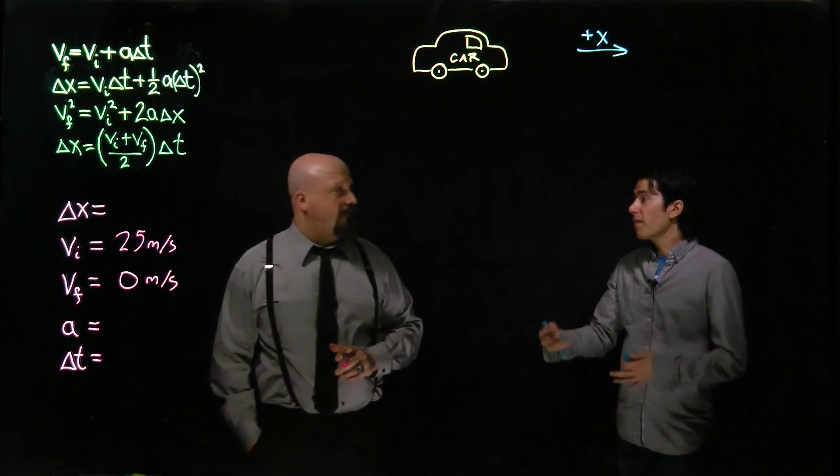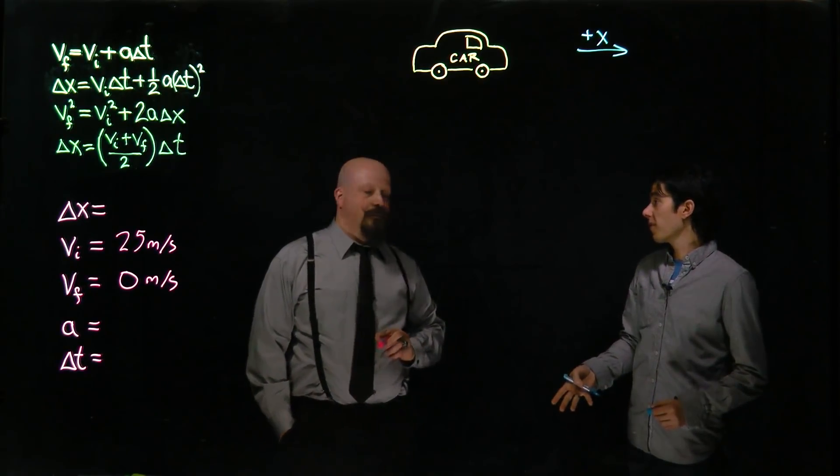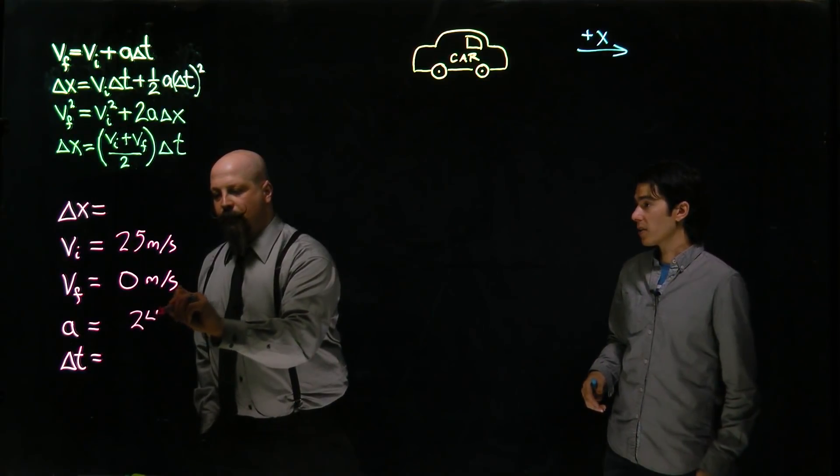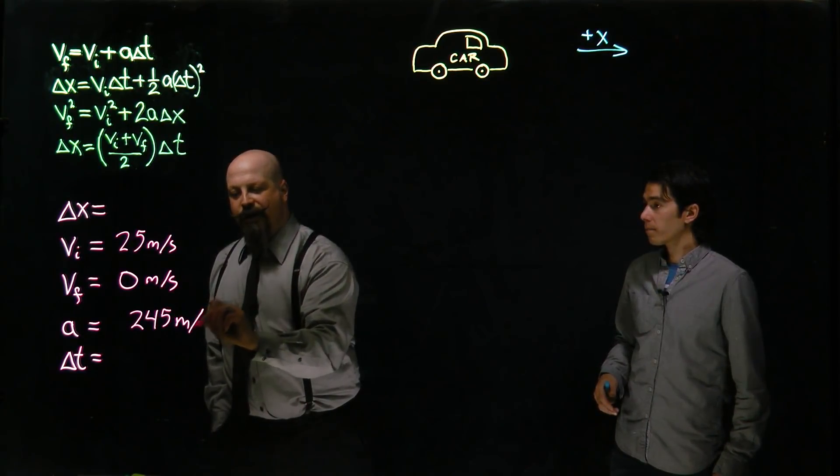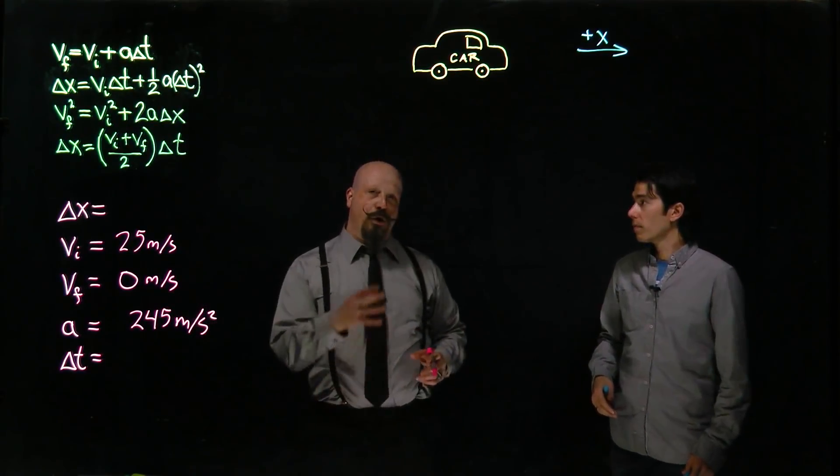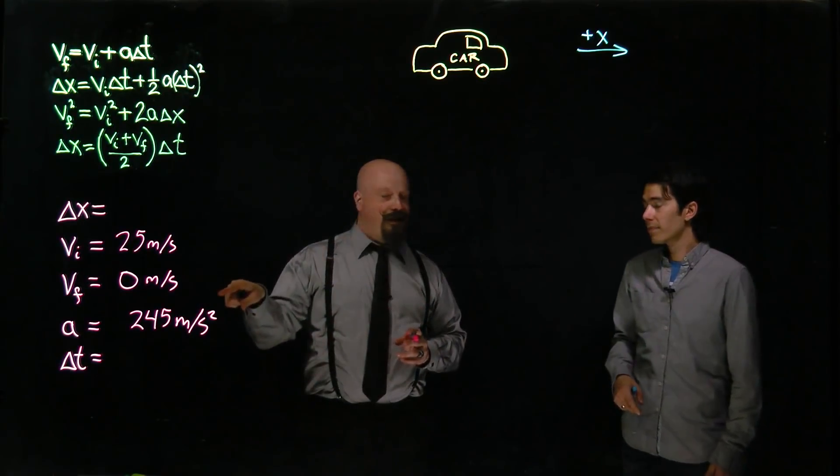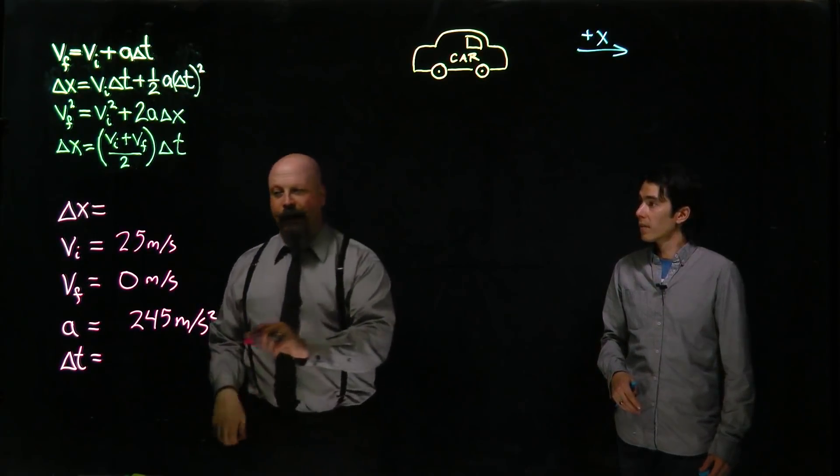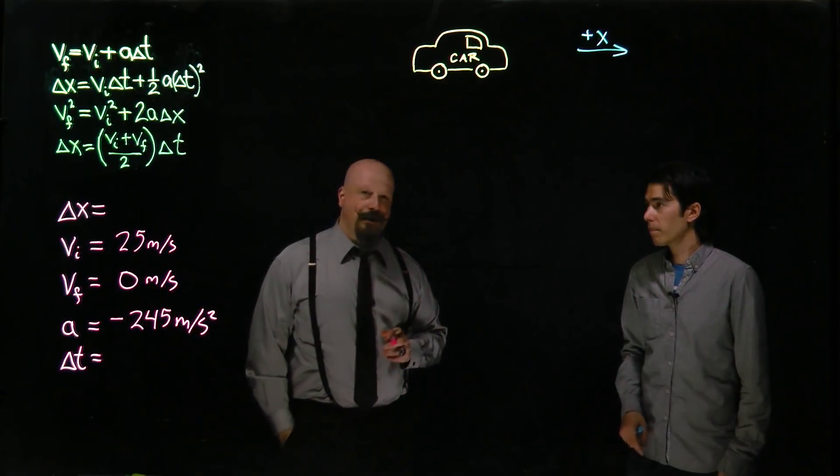Now, 25 Gs, 25 times 9.8, that's 245 meters per second squared is our acceleration. But we're actually slowing down in this case. We're going from a high velocity to a velocity of zero. So in this case, we're decelerating. We're slowing, and we have a negative value of that acceleration.